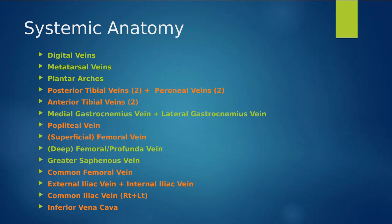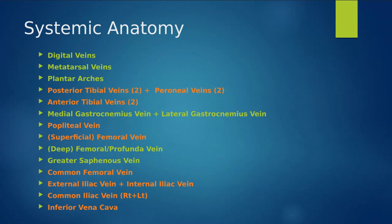Our green is our superficial system and our orange is our deep system. A lot of literature says the veins in the foot are also part of the superficial system. We'll talk about the difference between deep and superficial systems in a few slides, but just discussing the flow through these different veins in terms of systemic anatomy.